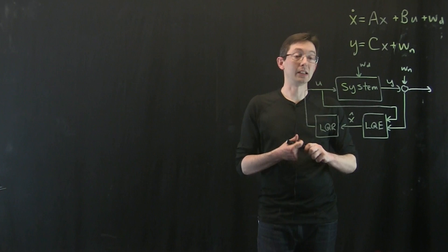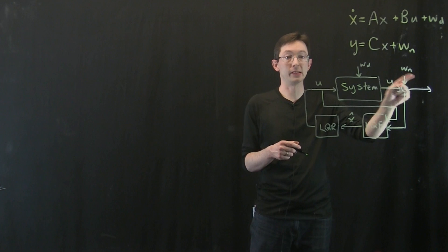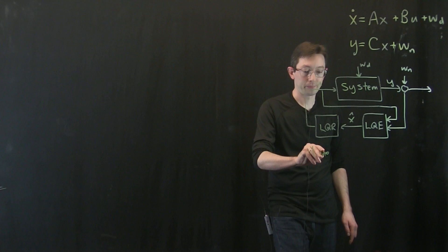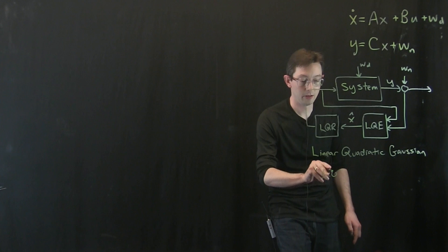Okay, so this combined system where I estimate the full state, then I do LQR, given Gaussian white noise disturbances and measurement noise, this is called the linear quadratic Gaussian control. And in practice, we call it LQG.